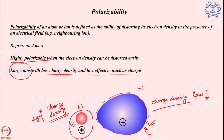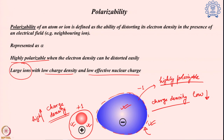Out of these 2 systems I will call the large anion a highly polarizable system because the electron density of this system can be distorted very easily. On the other hand, the small cation cannot be distorted very easily because it is much more strongly controlled by the presence of the nuclei — we cannot play from outside with this electron density. So we will say this is less polarizable.